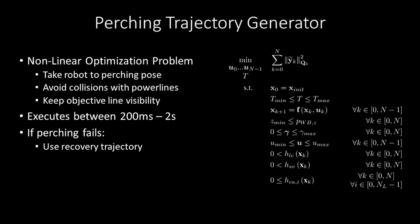These agile trajectories are computed with a non-linear optimization problem that includes an efficient formulation of the power line collision avoidance and also of the visibility of the objective power line.